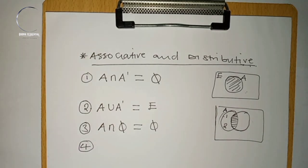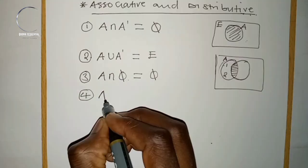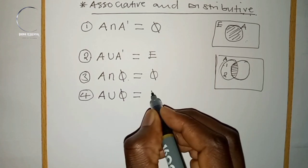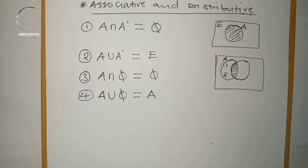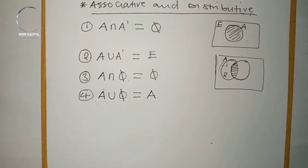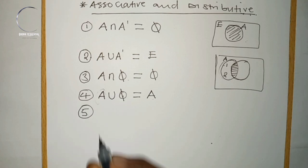The fourth rule states that a given set union an empty set results in the set itself. The total elements found in set A and the empty set give us set A. So A ∪ ∅ = A.